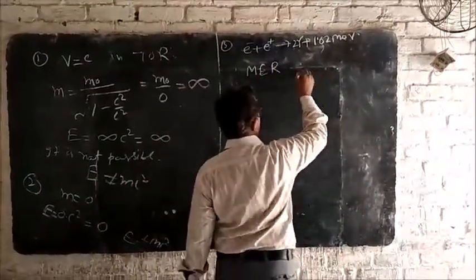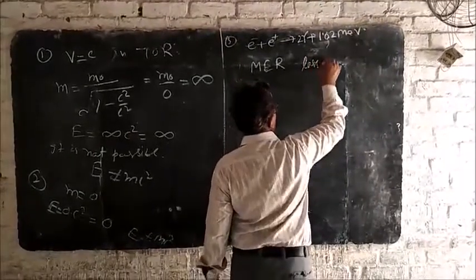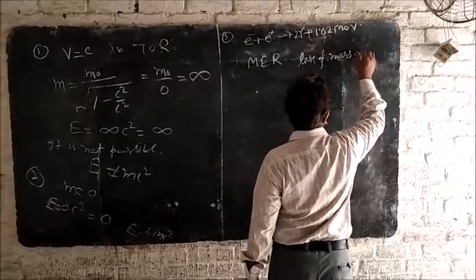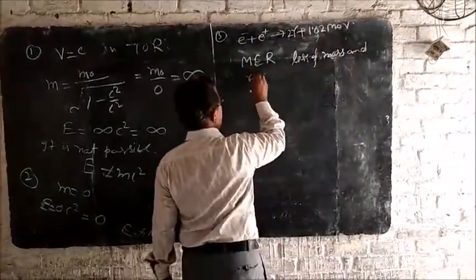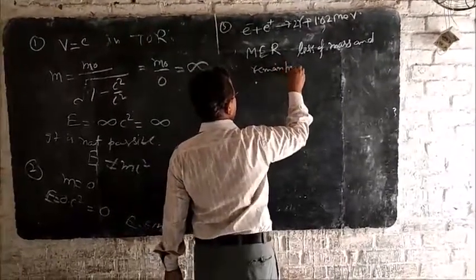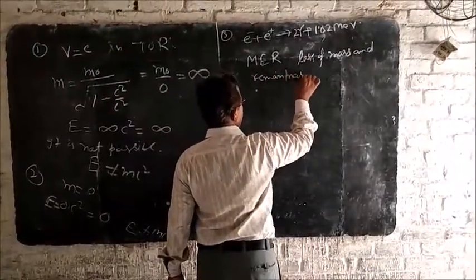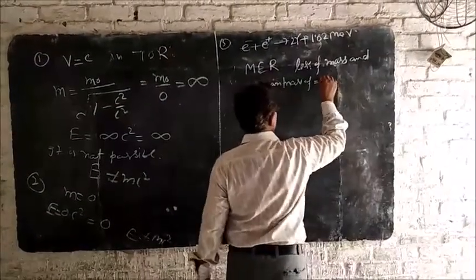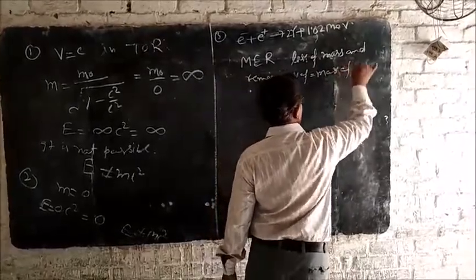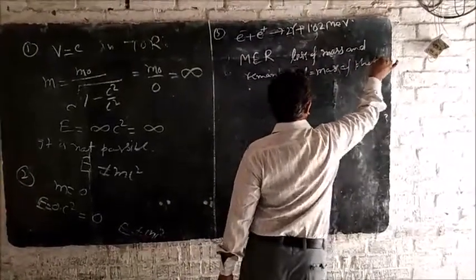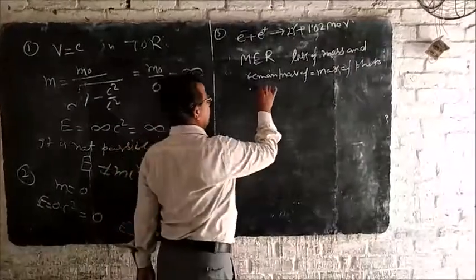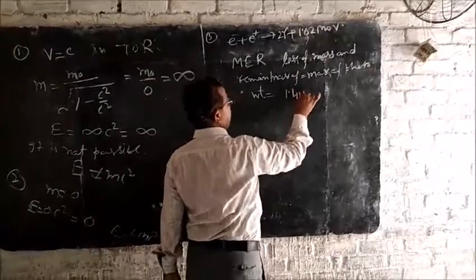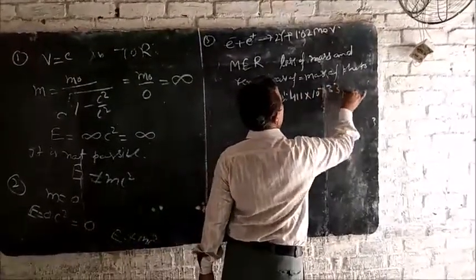the loss of mass and remains mass of photon mass equal to mass of photon. That mass of photon is equal to 1.411 into 10 to the power minus 33 kilograms.